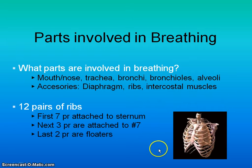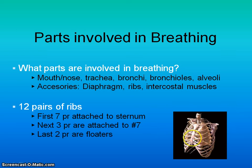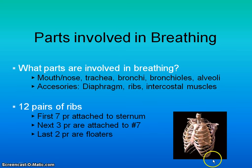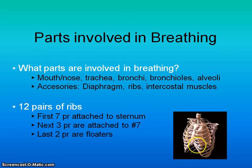If you look at your skeleton, we have 7 pairs of ribs that are attached to our main breastbone, the sternum. Then we have 3 more that are attached to that bottom 7th one. And then we have 2 pairs of floating ribs. They all enclose and protect the lungs and the heart.